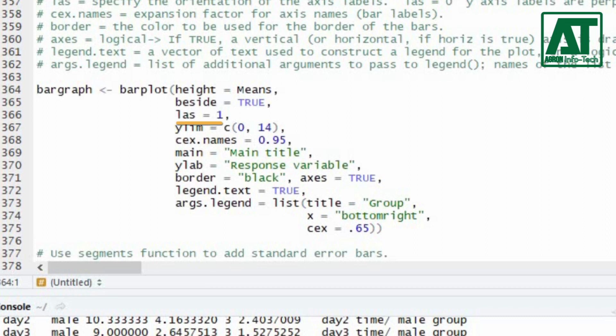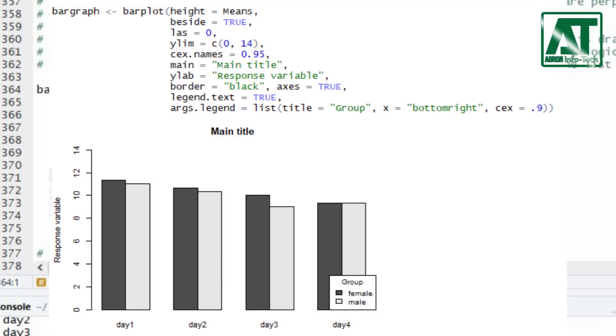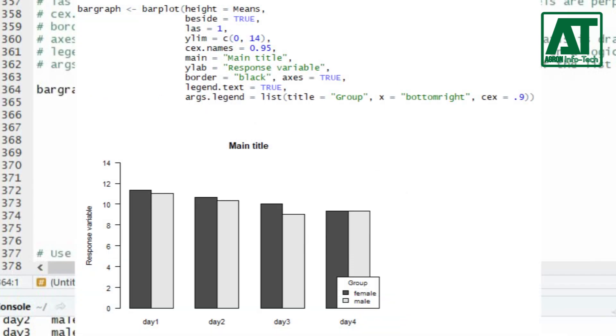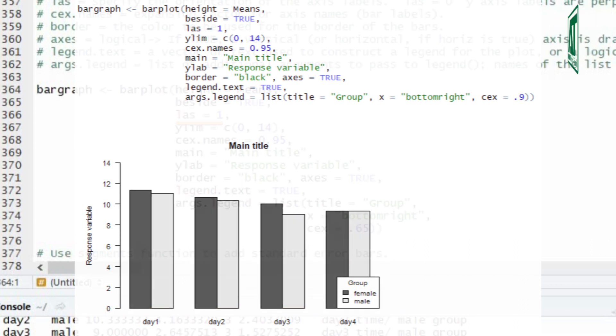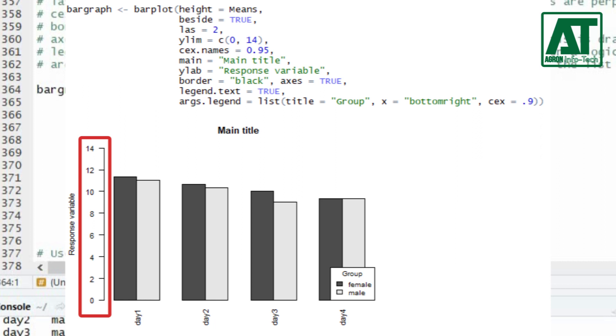LAS specifies the orientation of the axis labels. By keeping LAS value 0 will result in perpendicular Y axis labels and parallel X axis labels. One value for LAS will result in parallel orientation for both X and Y labels. Using two value for LAS will result in parallel Y axis labels and perpendicular X axis labels.